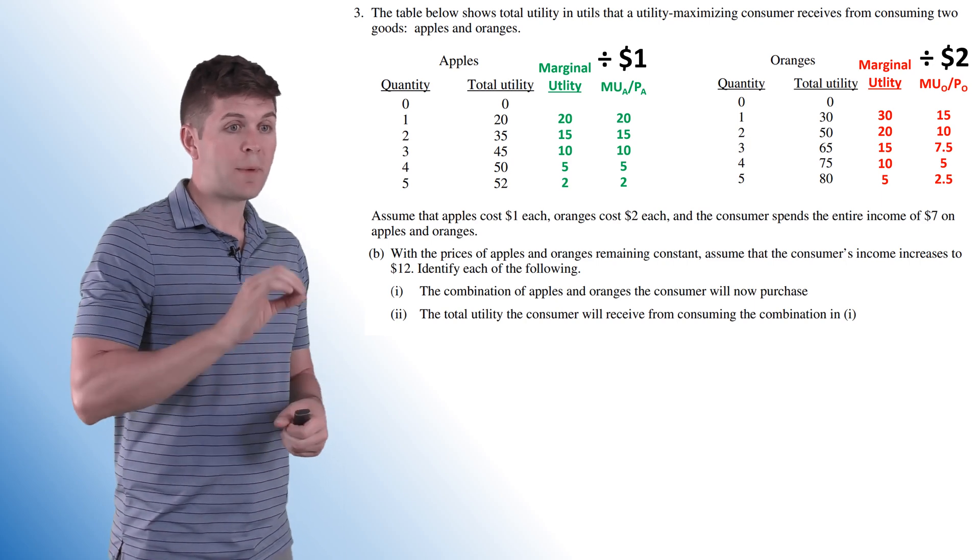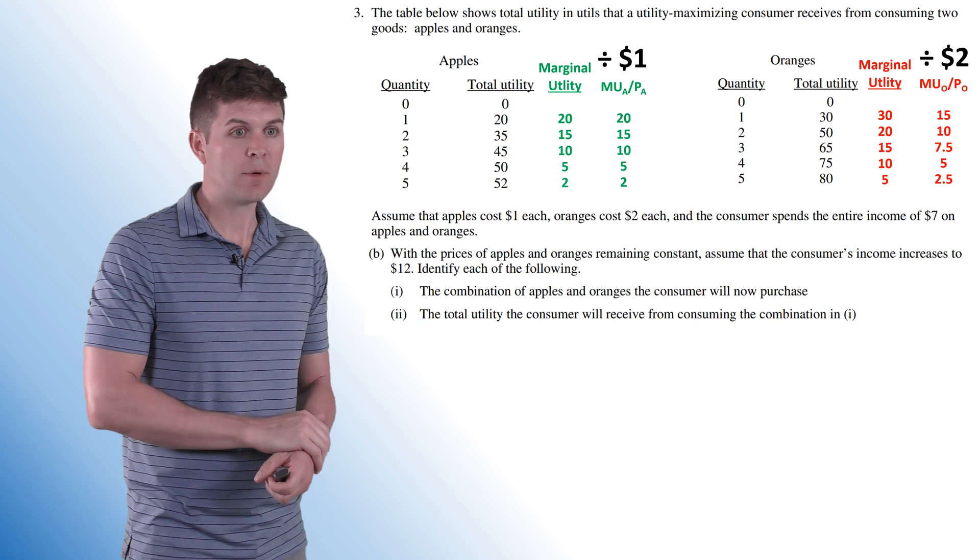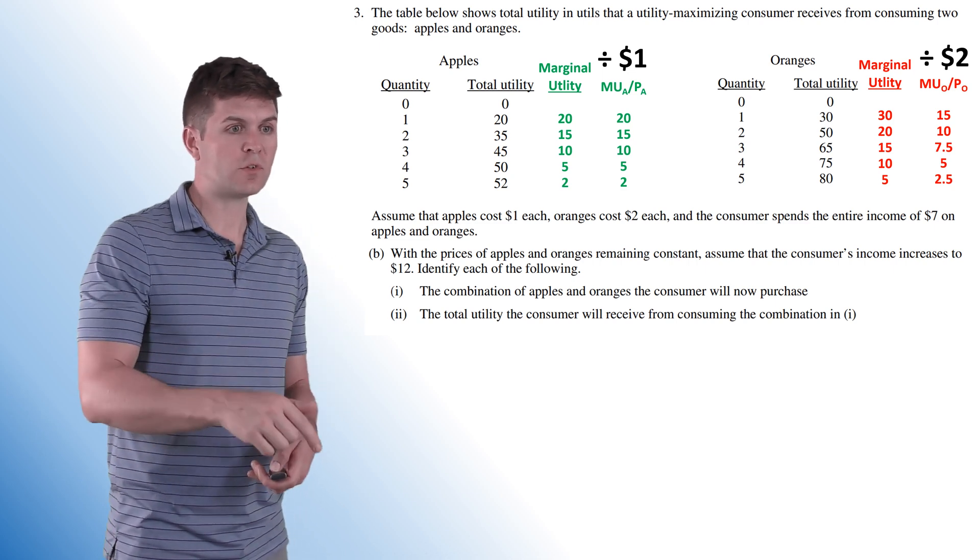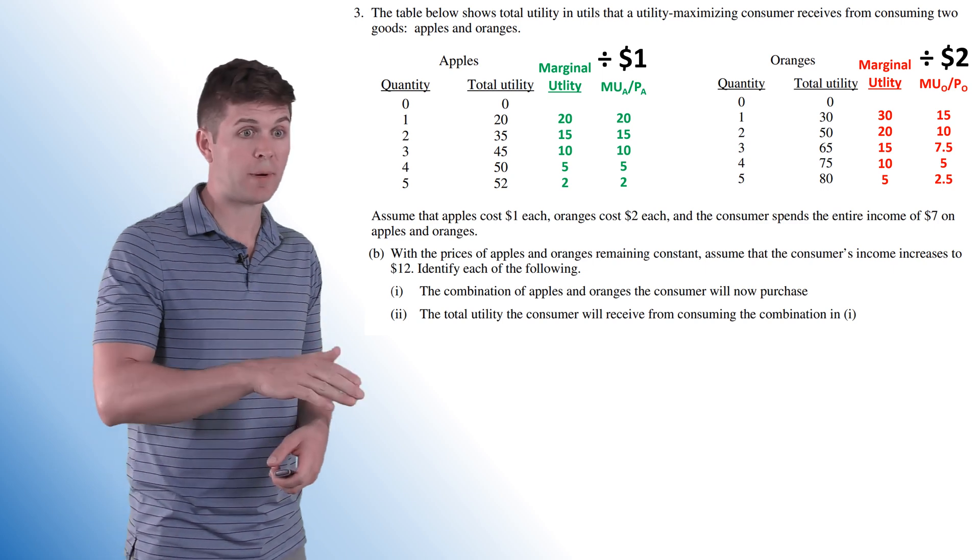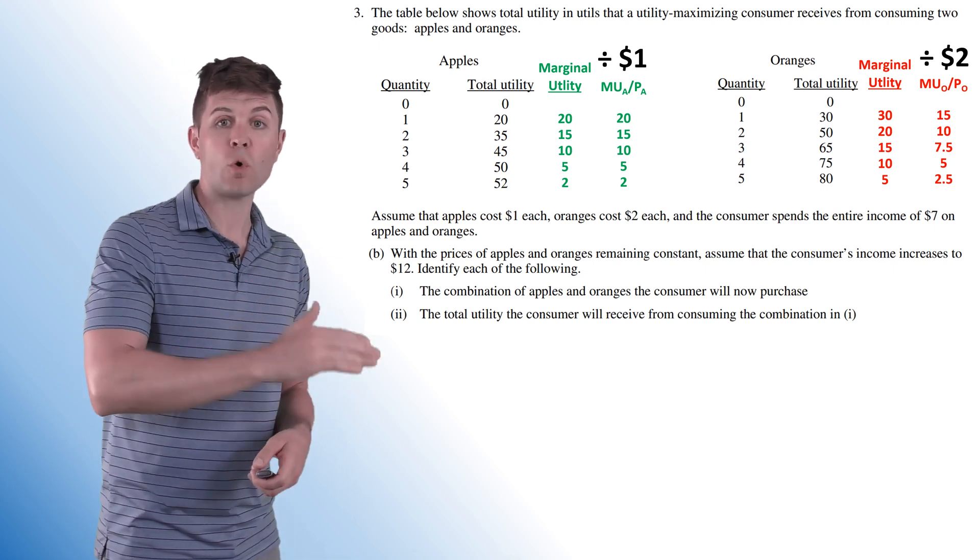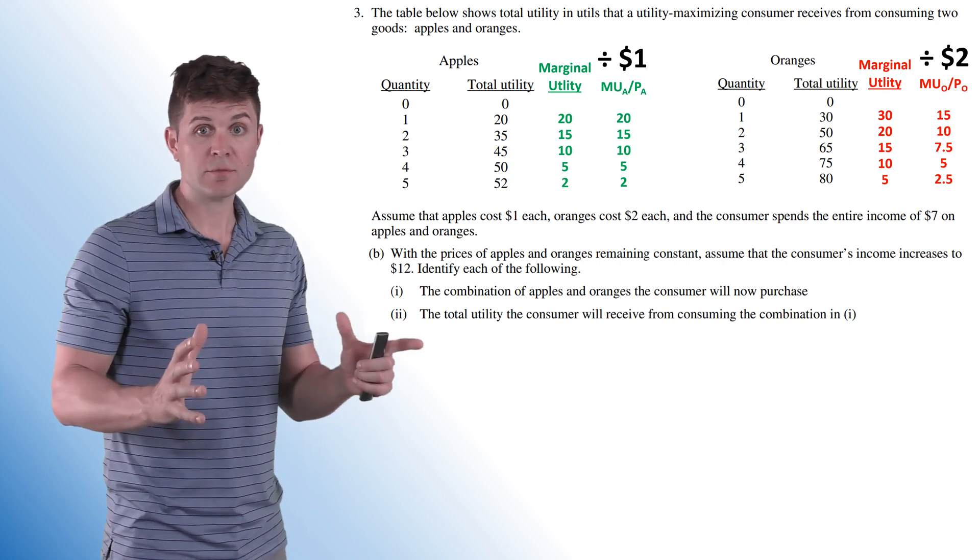Let's move on to part B. With the prices of apples and oranges remaining constant, so $1 for an apple, $2 for an orange, staying exactly the same. Assume that the consumer's income increases to 12. Identify each of the following. First, we're going to find our new combination of apples and oranges that we're going to buy, and then what is our total utility of our utility maximizing combination?